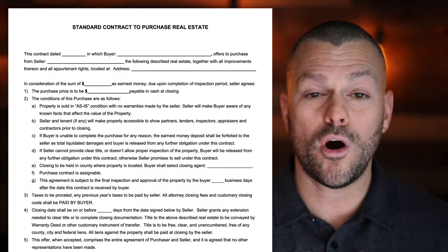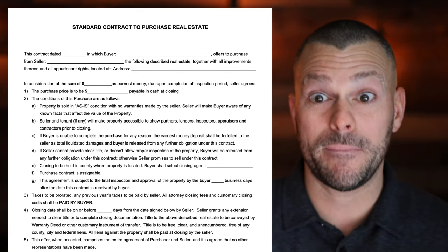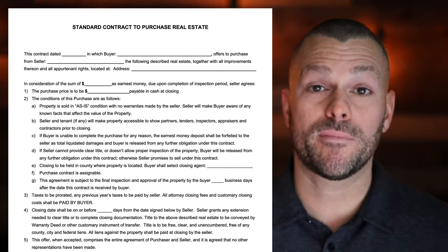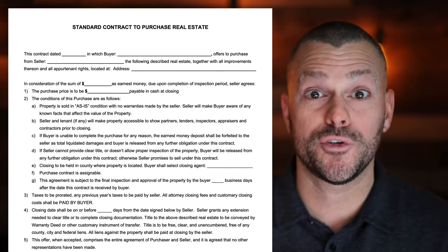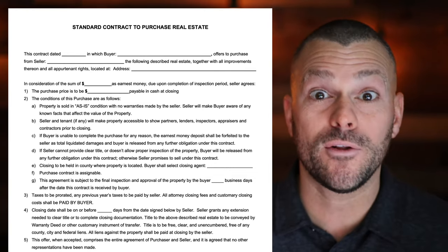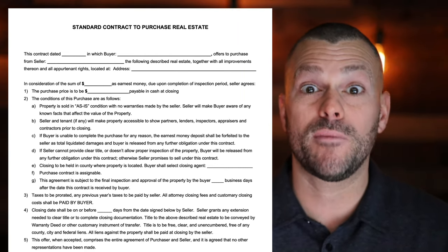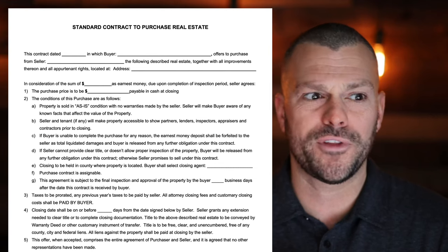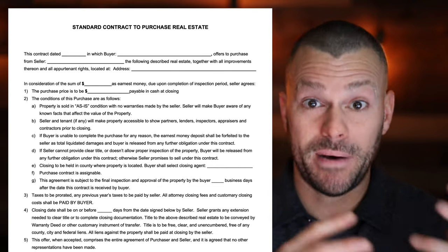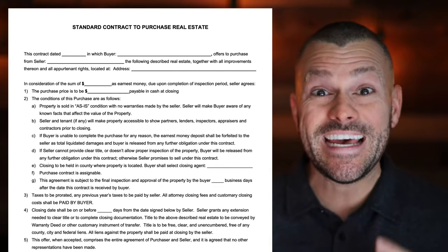All we're really going to do is fill in the blanks and get the contract signed by the owner of the property — the seller. In order to get a property under contract, we fill out a contract, get a signature, and take it to a title or escrow company, or maybe your state requires closing attorneys — there are only about 10 or 11 of those states. We're going to need the contract deposited into a third-party escrow — a title company or escrow — and earnest money.